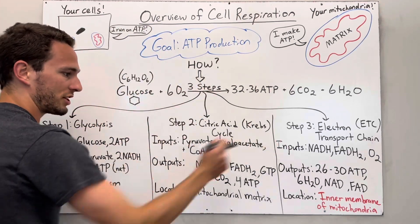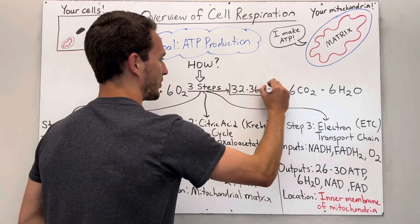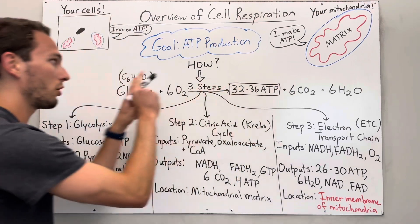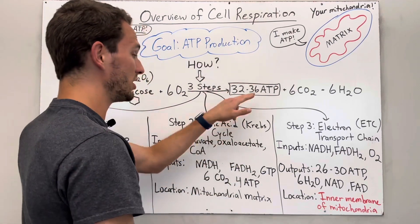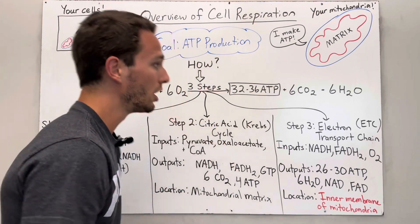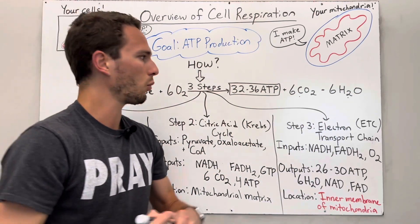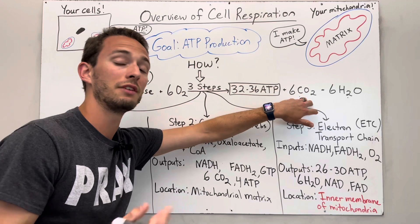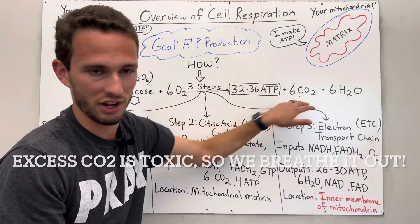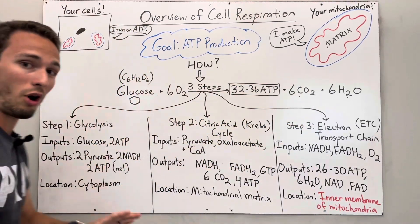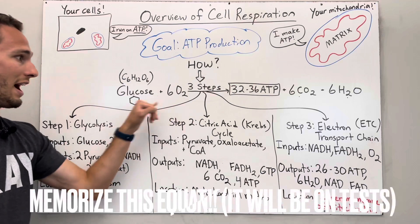So eating and breathing are the two main ingredients to cellular respiration. Then, in three steps, we produce three main products. The big product is ATP — we produce about 32 to 36 ATP molecules per glucose and per six oxygen. We also produce carbon dioxide as well as water, six of each. The carbon dioxide could be toxic if it builds up in excess, so we breathe it out. For a basic biology class, this is all you need to know.